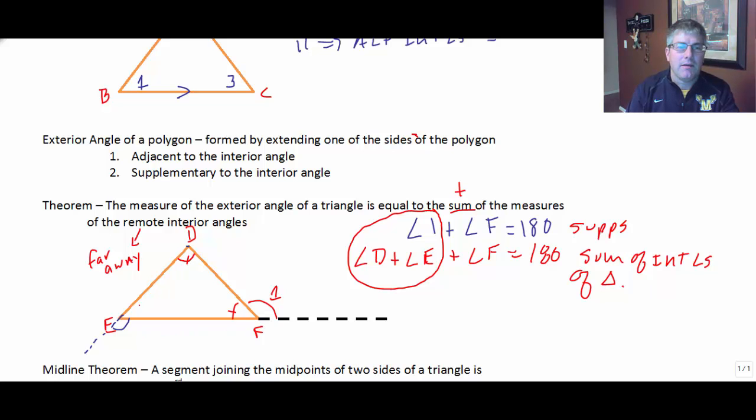So angle D plus angle E, just watch my tick marks here, plus angle E must equal angle 1. So angle D plus angle E equals angle 1. And there we go. We can see that the exterior angle of the triangle is equal to the sum of the two remote interior angles. If I add those two together, that will equal angle 1.